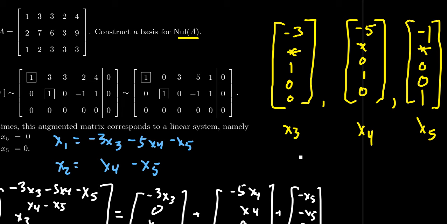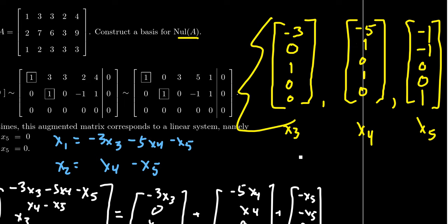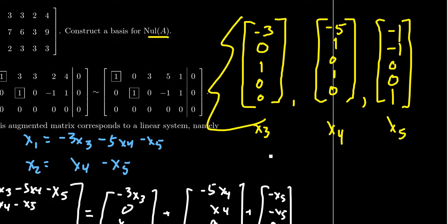For x2, look at the second pivot row. In the third spot you get a 0, so negative 0, which is still 0. In the fourth spot, we have a negative 1, so record a positive 1. And in the fifth spot, we have a 1, so record a negative 1. And so this right here gives us our basis for the null space of the matrix.